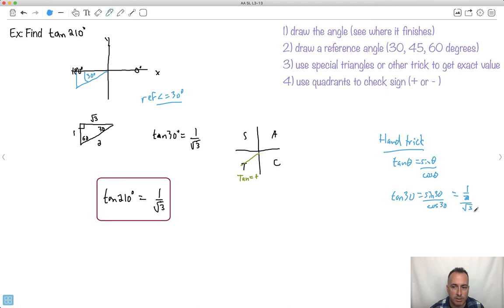And cos 30 would be root 3 over 2, which is complicated. What happens when you divide a fraction by a fraction? You multiply by the reciprocal. So this would become a 2 here and a root 3 here. The 2s would cancel out. You'd have 1 over root 3. Ta-da! So it was a little bit harder.